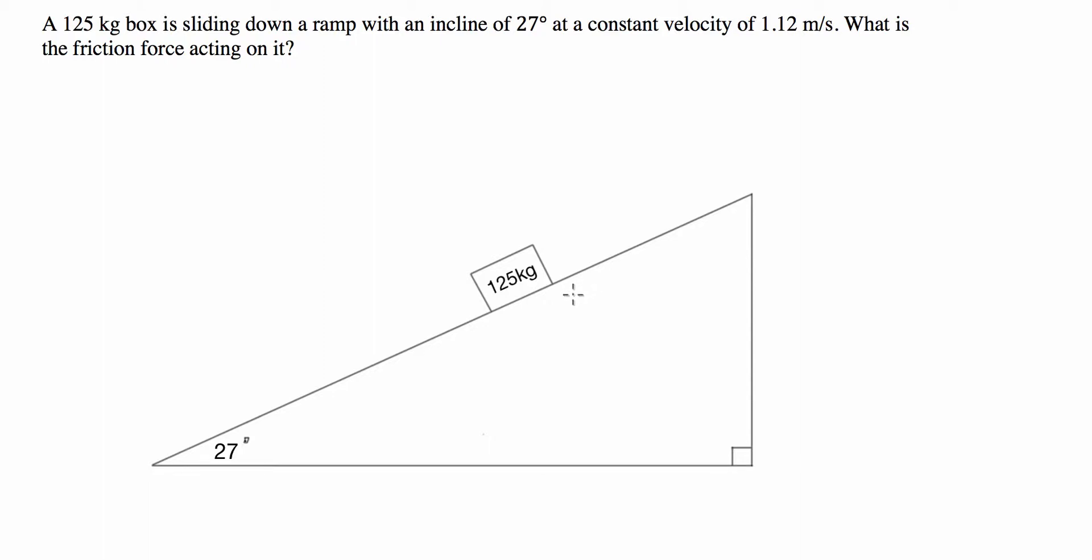Hi guys, I just had a question from one of my students regarding forces on a ramp or an inclined plane. The question is, we have a 125 kg box sliding down a ramp with an incline of 27 degrees at a constant velocity of 1.12 meters per second. What is the friction force acting on it?